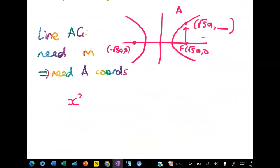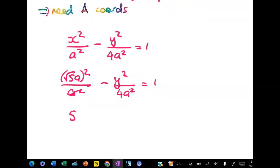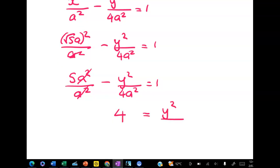We know that we've got x squared over a squared minus y squared over 4a squared is equal to 1. We're going to substitute in root 5a. So root 5a squared over a squared minus y squared over 4a squared is equal to 1. And we get 5a squared over a squared equals 1. We get 5 take away 1 gives me 4. 4 is equal to y squared over 4a squared. Rearranging here, 16a squared is equal to y squared.